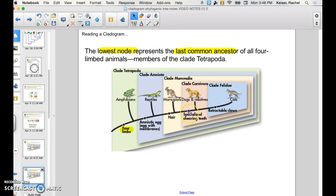So for instance, at this node right here, specialized shearing teeth, anything after that has that trait. Anything before it does not have that trait.